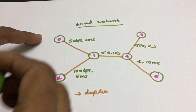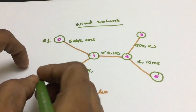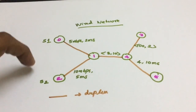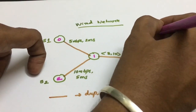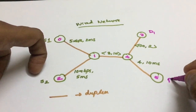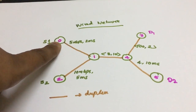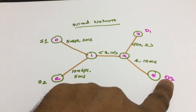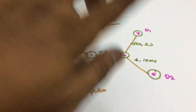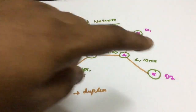Now I have created nodes, links, and assigned bandwidth and delay between each link. Next I need to decide the source and destination. I make node 0 as S1 (source 1) and node 2 as S2 (source 2). I use node 3 as D1 (destination 1) and node 5 as D2 (destination 2). So S1 wants to send a packet to D1 and S2 wants to send a packet to D2.